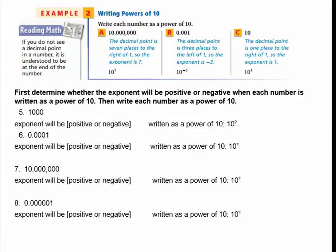Now we're going to take a number in standard form and change it to a power of 10. First, figure out if it's going to have a positive or negative exponent, then write the power of 10. For a big number, the exponent will be positive. You can put your decimal point at the back and figure out how many places to get to the 1 — that's 1, 2, 3 — so you'd write this as 10 to the 3rd. You can use shift+6 to write the exponent as well.